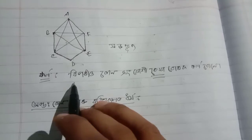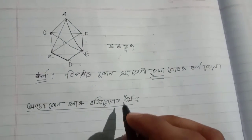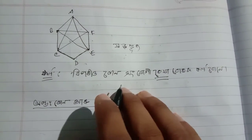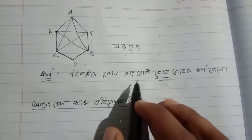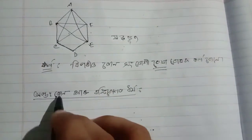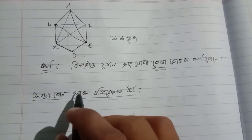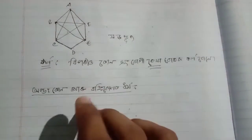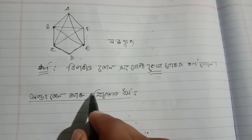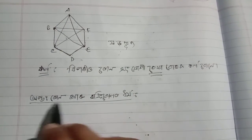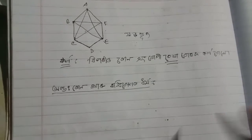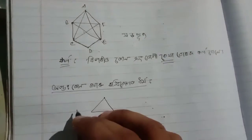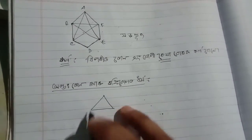So now we know the definition and properties of a polygon (Bahubhuj). We also found the diagonals of each polygon. The interior angles of a polygon are important — let us now find the sum of all interior angles of a polygon.